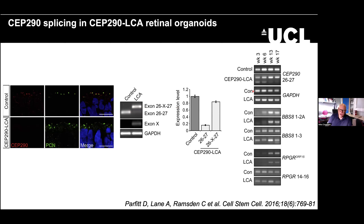Looking at when this happens: the shift starts kicking in between six and thirteen weeks of organoid development — going from more like 50/50 in the iPSCs to 90/10 or 80/20 in the organoids. Interestingly, that coincides with the introduction of retinal isoforms of other genes, for example BBSA or RPGR. There seems to be something related to how photoreceptors use alternative splicing to maximize and specialize their genome.